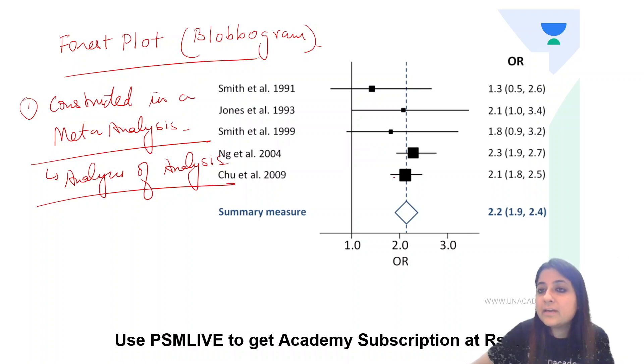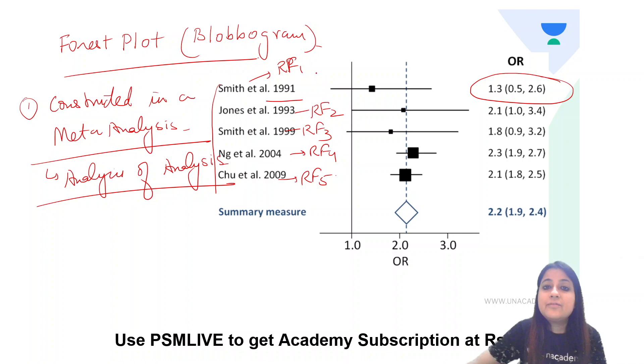Now look, what do we do in a forest plot? Suppose we wanted to study risk factors and breast cancer association. We have reviewed five studies. In the first study, you get an odds ratio like this. Suppose we were studying risk factor 1 over here. Here we were studying risk factor 2. Here we were studying risk factor 3. Here we were studying risk factor 4. And here we were studying risk factor 5.